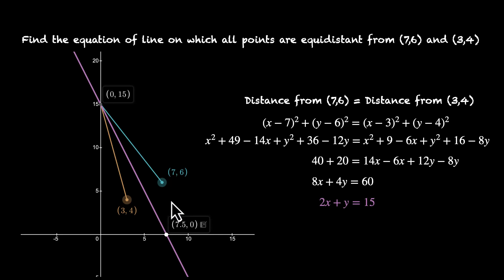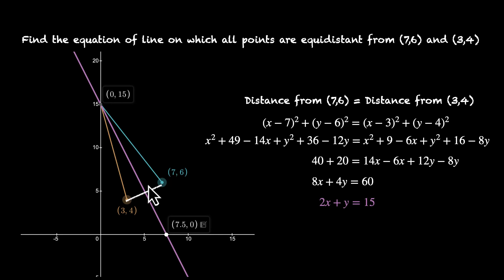Why is this line equidistant from both points? Pause and think about it. If you join the two points, you get two triangles, and this line is the perpendicular bisector of that line segment. The perpendicular bisector creates two congruent triangles: the angle is 90°, the bisecting length is common, and the bisected side is equal on both halves. Because these triangles are congruent, by corresponding parts of congruent triangles, the sides from any point on this line to each of the two original points are equal. So any point on the perpendicular bisector is always equidistant from the two given points.